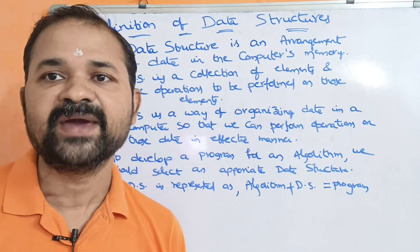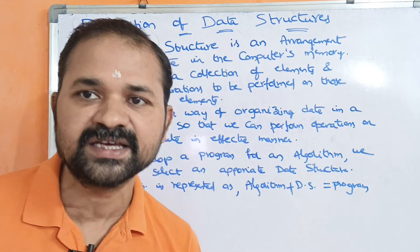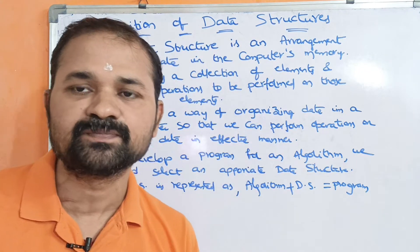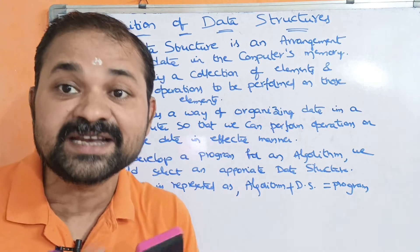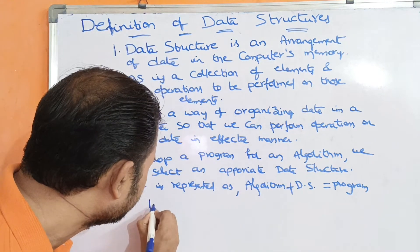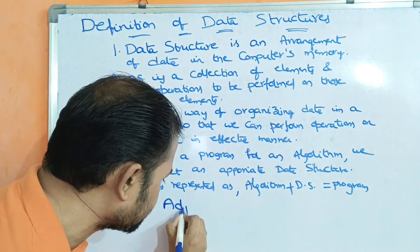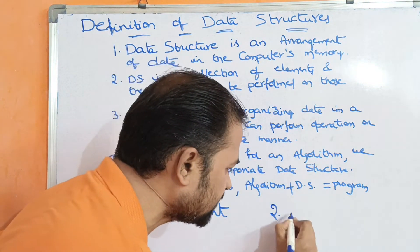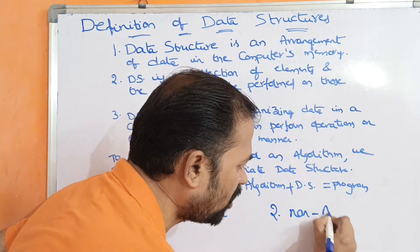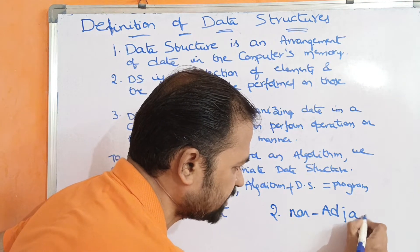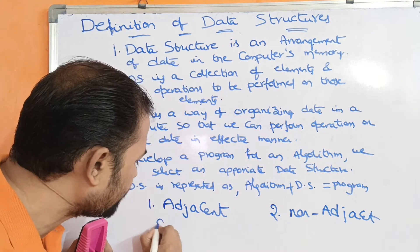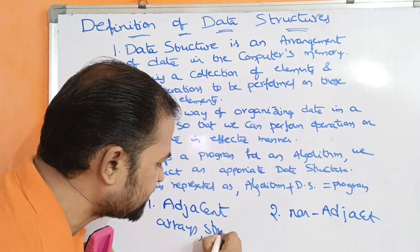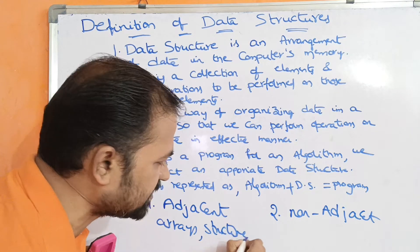Data can be stored in the computer's memory in two ways. First is sequential adjacent memory locations. Second is non-adjacent memory locations. The best examples of adjacent memory locations are arrays and structures.